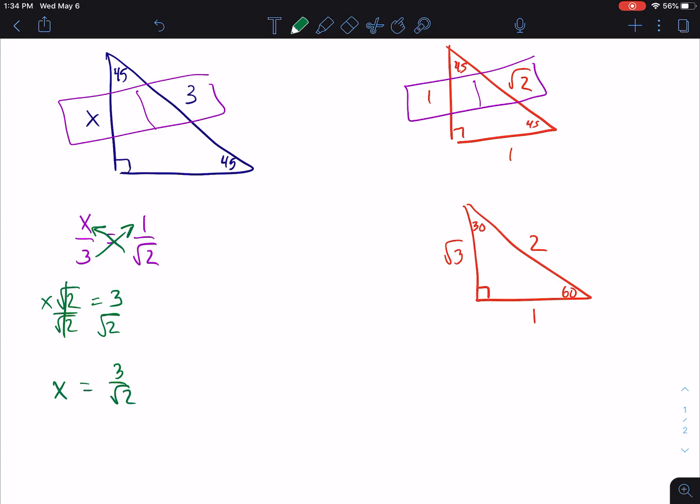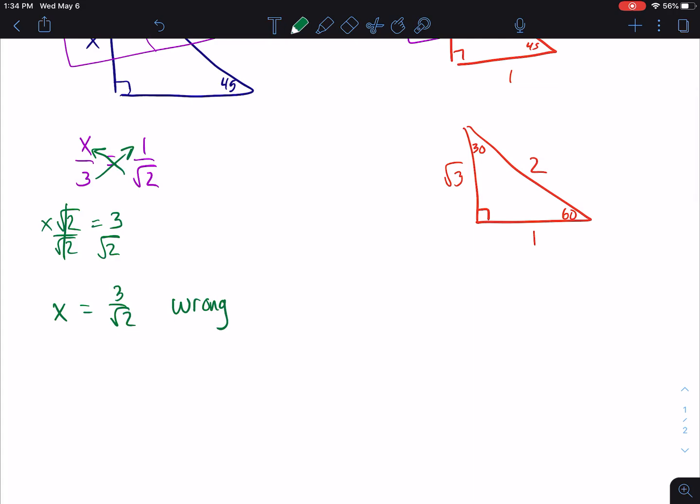You're putting that answer into Delta Math. Delta Math is going to tell you that you are wrong, and the reason Delta Math is going to tell you that you are wrong is because you are not allowed to have a radical in the denominator. You are never allowed to have a radical in the denominator.